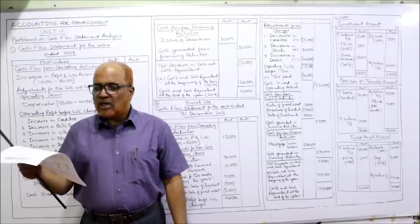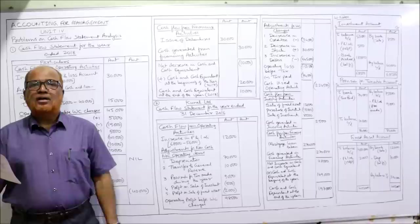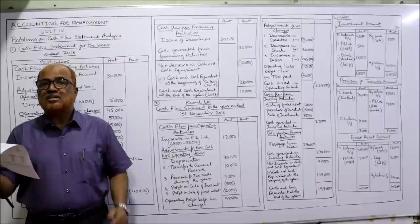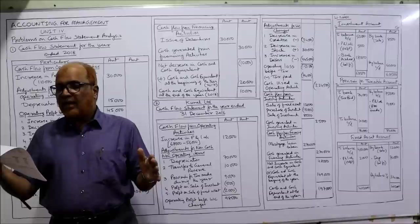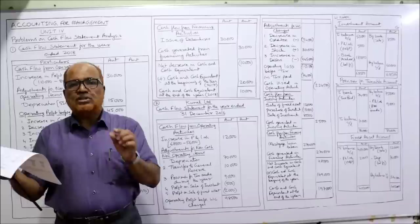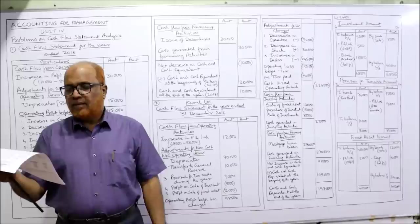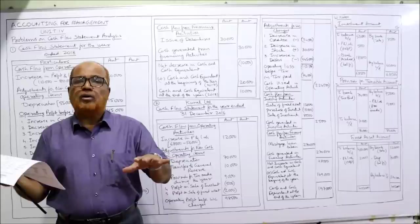General reserve: last year 3,00,000, current year 3,10,000 — during the current year 10,000 transferred to general reserve, a non-cash non-operating item. P&L account: last year 56,000, current year 68,000 — this P&L account balance will be the starting point in cash flow from operating activity. Creditors is a current liability. Tax provision is given. Mortgage loan is a long-term loan — it will be taken under financing activity.